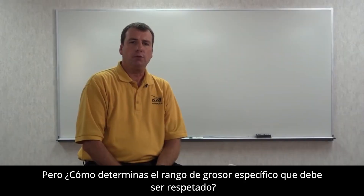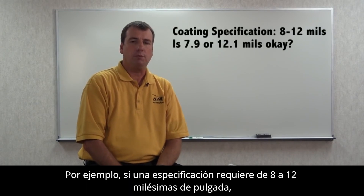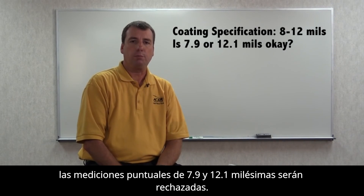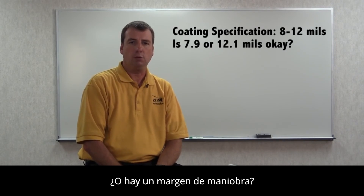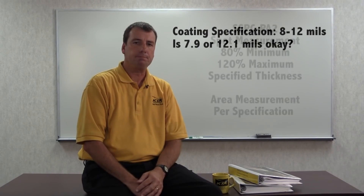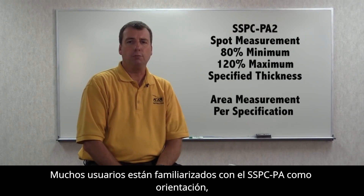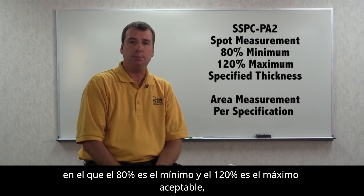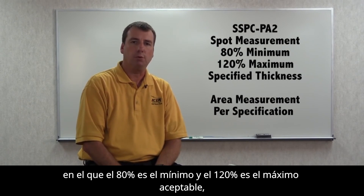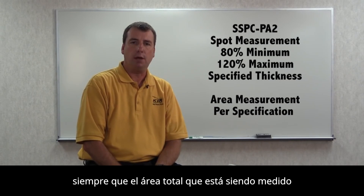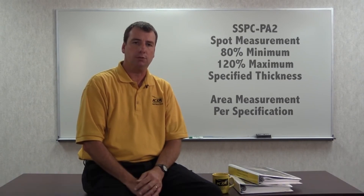But how do you determine the specific thickness range that must be adhered to? For example, if a specification requires 8 to 12 mils, are spot measurements of 7.9 and 12.1 mils rejected or is there some leeway? Many users are familiar with the SSPCPA2 guidance that 80% of the minimum and 120% of the maximum are acceptable, provided the total area being measured is within the specification limits.